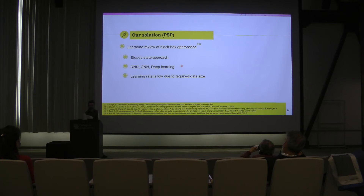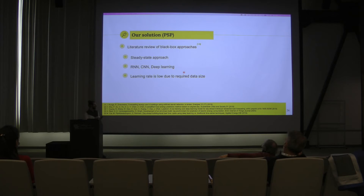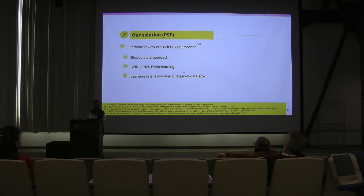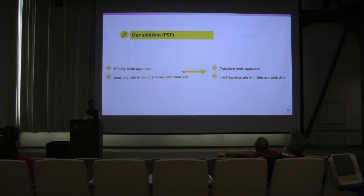Once we plug this model into a house, it would take a lot of data for it to make accurate predictions. Each house would be different based on how well it is insulated and other factors. So we want to be able to take a model, put it into a house, and have a learning rate where our error goes as close to zero as possible quickly. This is something that in the literature is simply not addressed. The two things we need to address are: one, a transient state approach where the temperature goes from T1 to T2 and we predict what happens during that transition; and two, very fast learning rates.